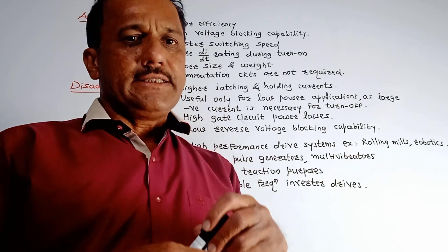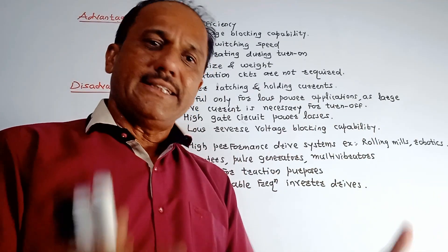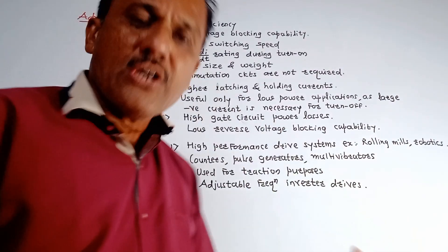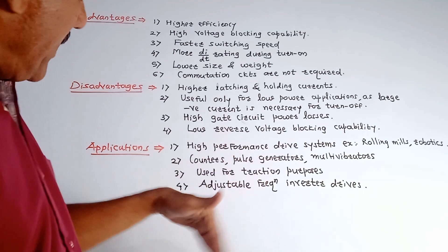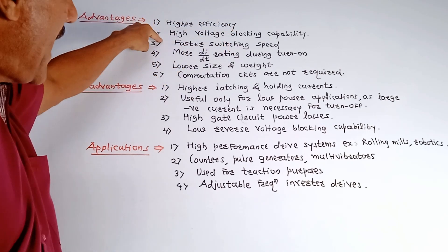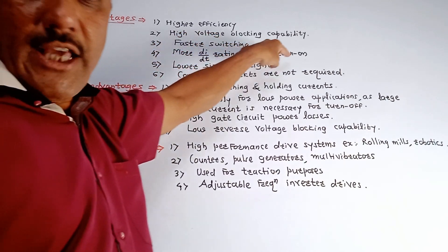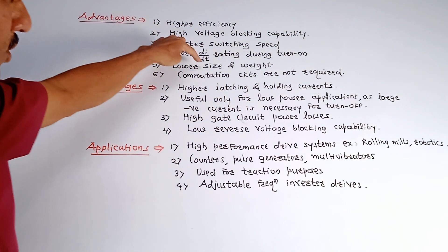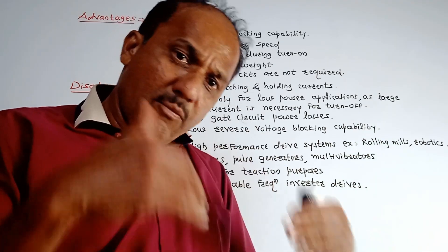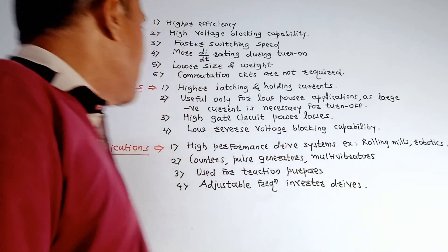Now we will discuss advantages, disadvantages, and applications of GTO. If the question asks you to compare GTO and SCR, you can include these points. Advantages of GTO: higher efficiency, high voltage blocking capability compared to SCR, faster switching speed, higher di/dt rating especially during turn on, lower size and weight, and no commutation circuits are required for GTOs.